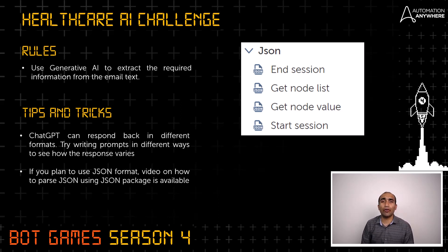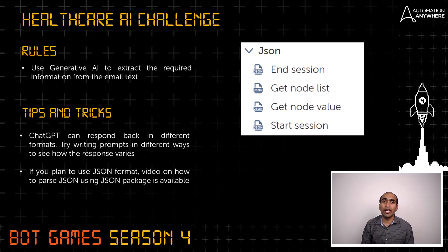Let's talk about a couple of tips and tricks. ChatGPT can respond in different formats, so you have to be very specific in the way you write prompts to generate the required information in the preferred format. Try writing prompts in different ways to see how the response varies. If you plan to use the JSON package, we have a video to show you how to parse JSON using it, and I'll leave the video link in the description.